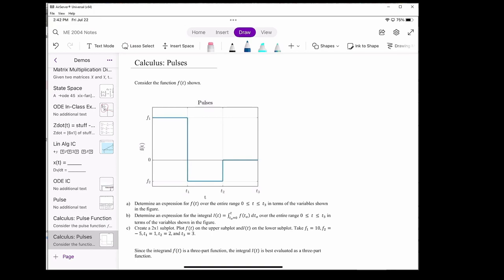The first part of the problem wants us to determine an expression for f of t over the time range 0 to t3 in terms of the variables shown, which would be f1, f2, t1, t2, and t3. We can see that f of t has the value f1 up until time t1, then from time t1 to t2 the value is f2, and then from time t2 to t3 the value is 0.